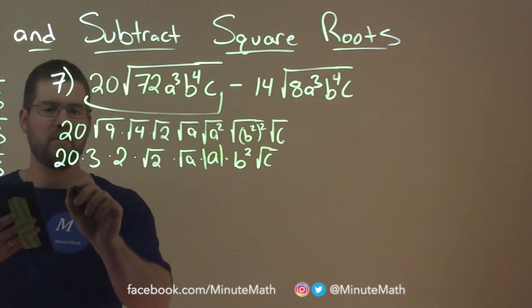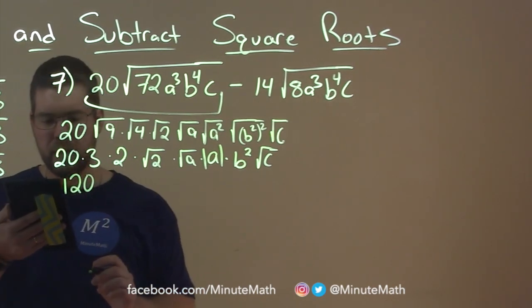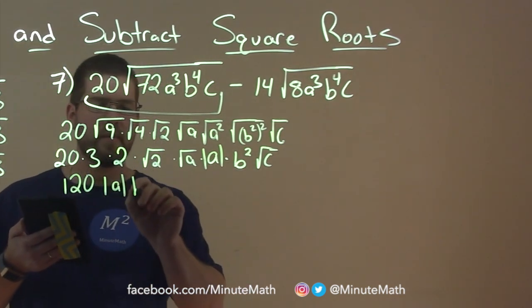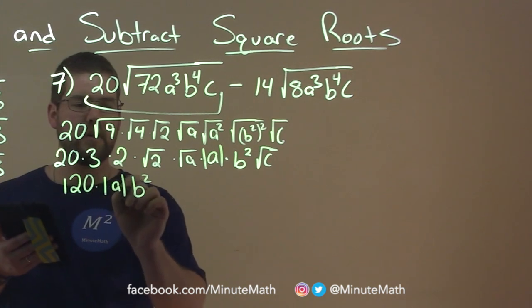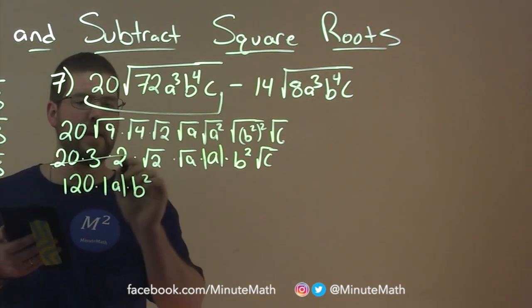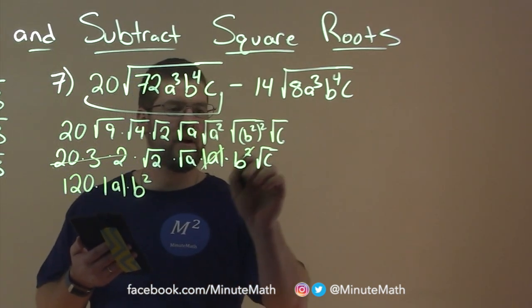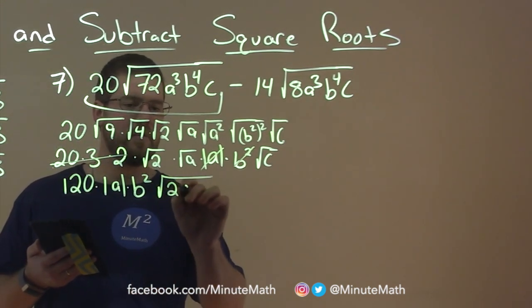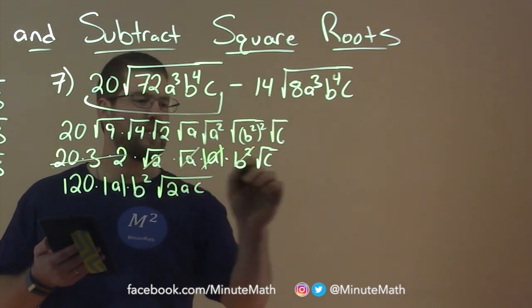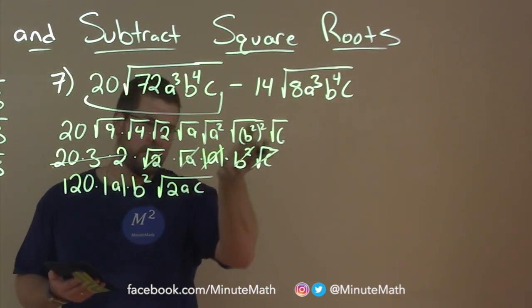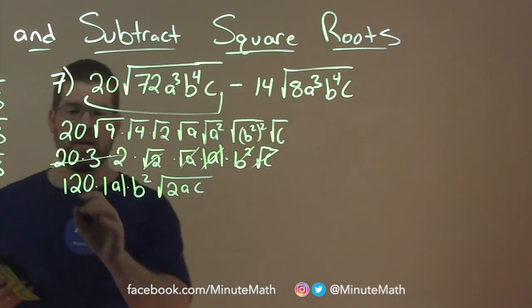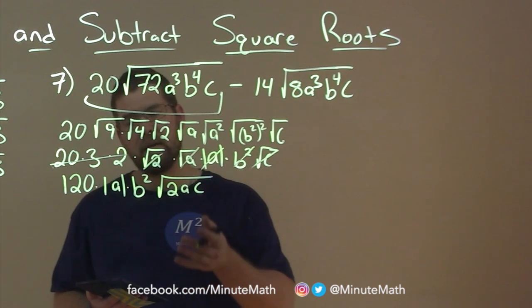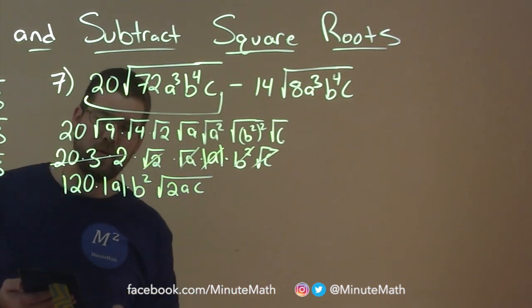So let's multiply it out. 20 times 3 times 2 is 120. And then let's put the absolute value of a out front, and then b squared. So the multiplication going on here, and I've gotten all of these here. And now everything inside the square roots can be as one term, that's 2ac, crossing off each part to make sure that we brought everything down. And now we have it kind of in simplest form here: 120 times the absolute value of a times b squared times the square root of 2ac.